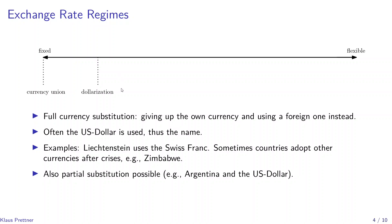The next regime would be dollarization, which is also a very extreme fixed exchange rate regime. In this case, a country gives up its own currency and uses a foreign currency instead — a full currency substitution. Often the US dollar is used as this substitute currency, hence the name dollarization. Examples include Liechtenstein, which uses the Swiss franc as legal tender. Sometimes countries adopt a foreign currency after a crisis; for example, Zimbabwe used dollarization after experiencing hyperinflation in order to bring the inflation rate down.